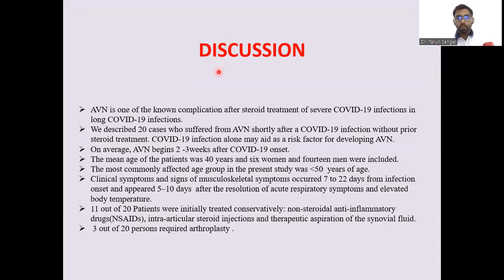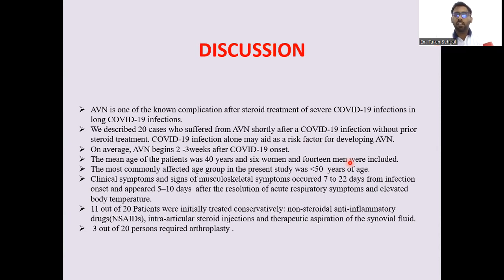Discussion: AVN is one of the non-pulmonary complications after steroid treatment of severe COVID-19 infections. We described 20 cases who suffered from AVN shortly after COVID-19 infection, some without prior steroid treatment, suggesting COVID-19 infection alone may act as a risk factor for developing AVN. On average, AVN begins 2 to 3 weeks after COVID-19 onset. The mean age of the patients was 40 years; 14 men and 6 women were included. The most commonly affected age group was more than 50 years of age.